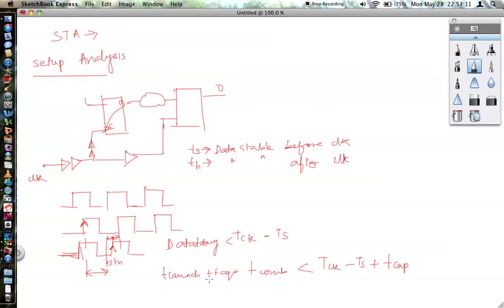And to check for the worst case, basically you check the max values. T clock period is constant. T setup, so you take the worst case setup so that you have more subtracted from your T clock plus T capture.